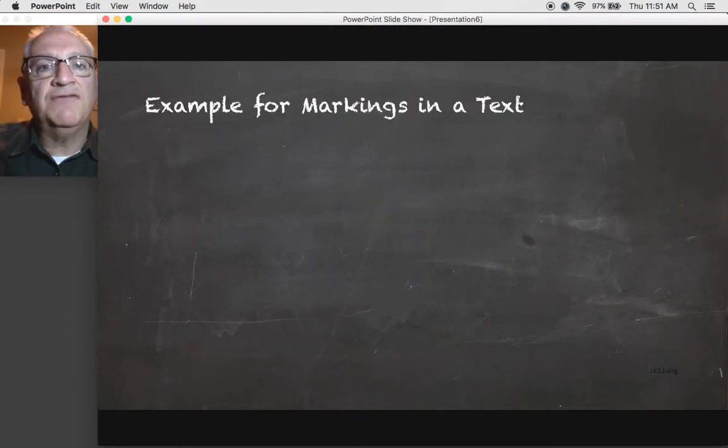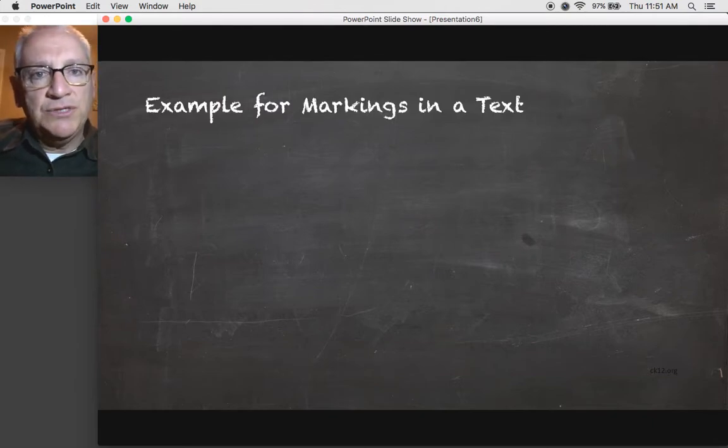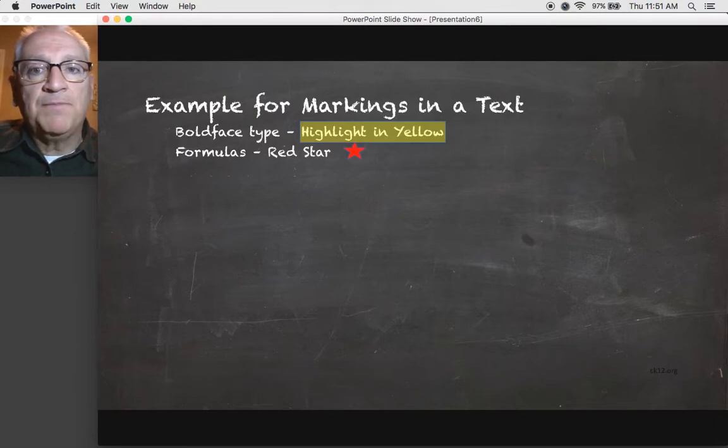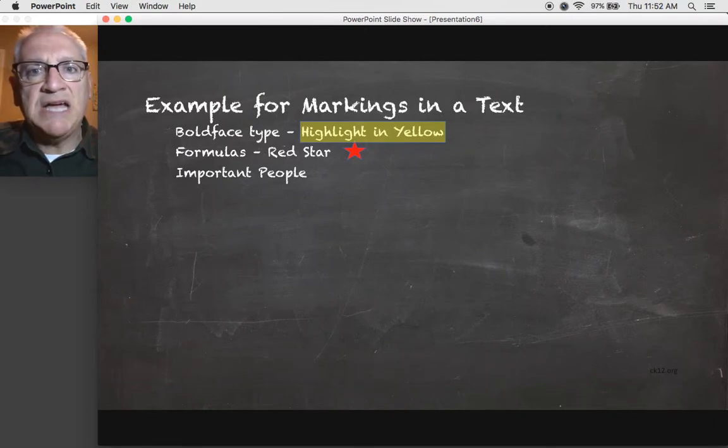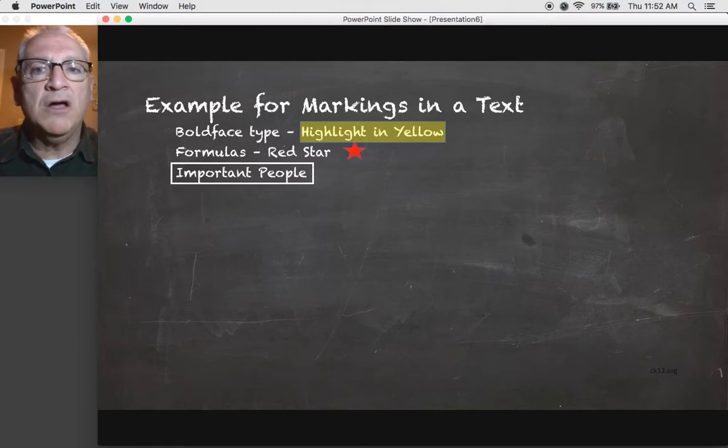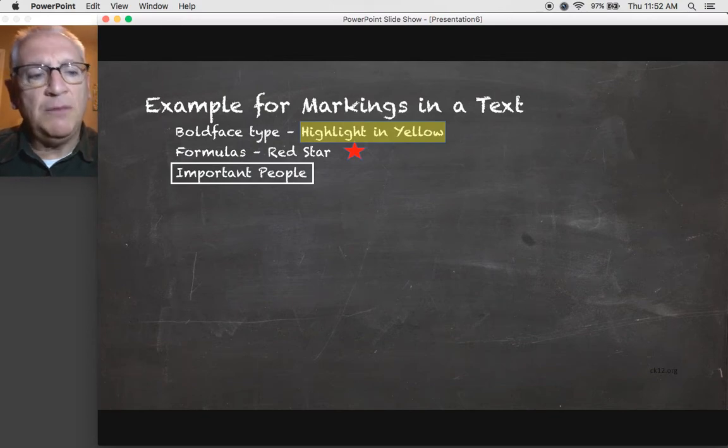So let's take the first possible marking. Now, this is an example that I use, but you can make up your own if you desire. So we did the bold face type we highlighted in yellow. If we had formulas, we used a red star. Now, what would happen if we ended up with important people like Niels Bohr or Antoine Lavoisier or Isaac Newton or Albert Einstein? If we had important people, you could put a square or circle the people's name.